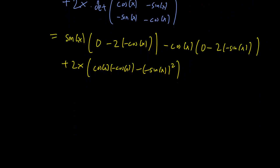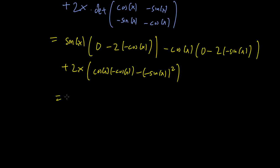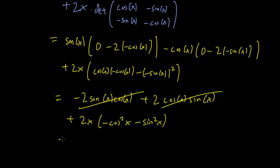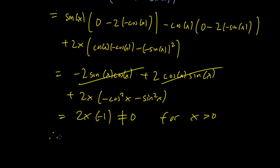So that's our determinant. Doing the calculation, we find minus 2 cos x plus 2 cos x — these two cancel. And the remaining term is 2x times (cos²x plus sin²x) equals 2x times 1, which gives minus 2x. This is always non-zero for x greater than 0, and we conclude that our three functions are linearly independent.